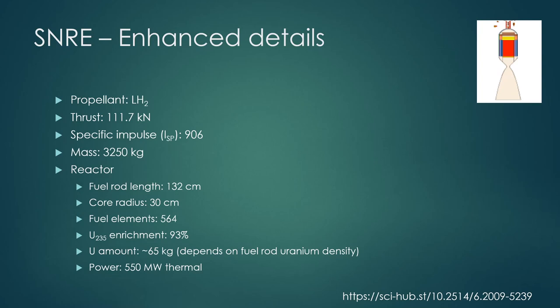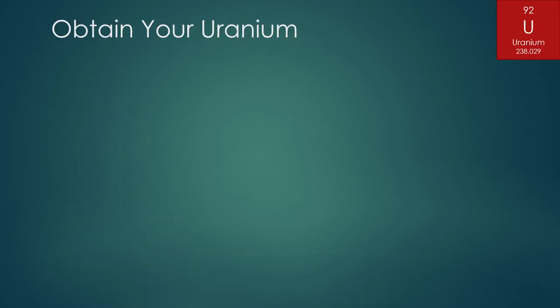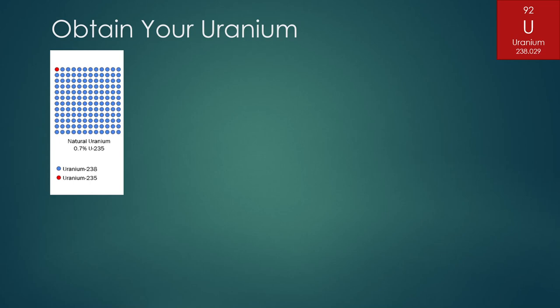So the first step we're going to have to do is figure out how to obtain uranium for this rocket. And this requires a discussion about uranium and different kinds of uranium. We're going to start by talking about natural uranium. Natural uranium is primarily composed of two isotopes: uranium-238, which makes up 99.3% of all uranium atoms, and uranium-235, which makes up about 0.7%.